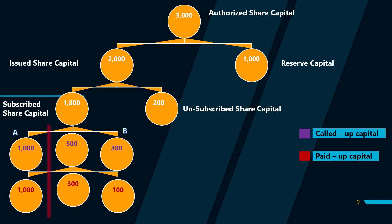Ab aata hai distinguish between the two categories. Pehli category ko bolte hain subscribed and fully paid up — ismein humne poora paisa maanga aur hamare paas poora paisa aa gaya. But on the other hand, jo baaki do parties hain — 500 mangoes waali mein maine maanga poora 500 par mujhe mila 300, aur jo 300 waali category hai usme maine maanga hi 100 aur mila bhi 100 — but ye dono hi categories ek hi main category ke andar aati hain, jisko bolte hain subscribed but not fully paid up. Ye important hai while making the balance sheet of a company.